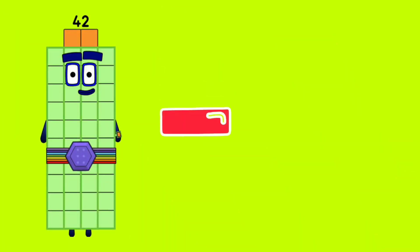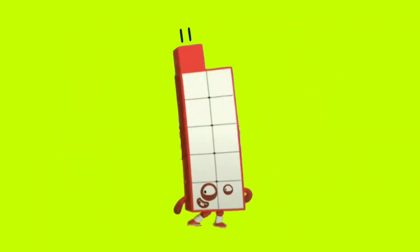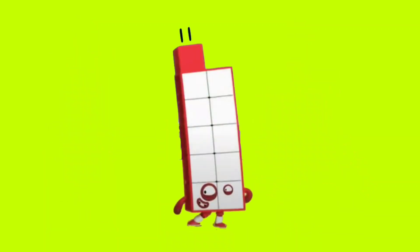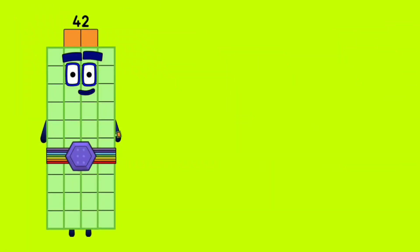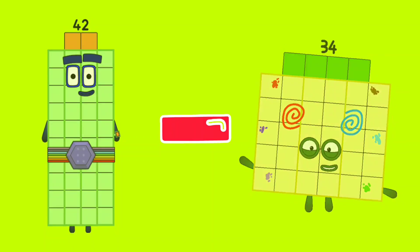42 minus 31 is equal to 11. 42 minus 34 is equal to 8.